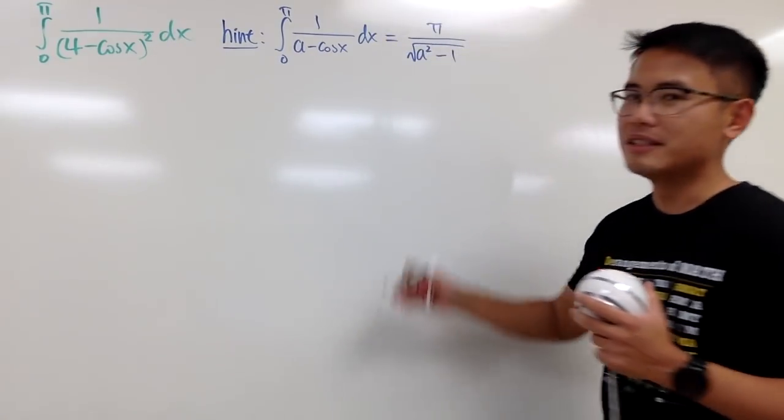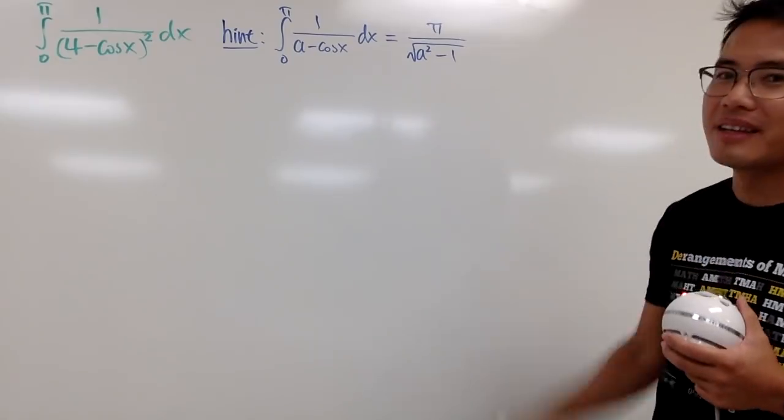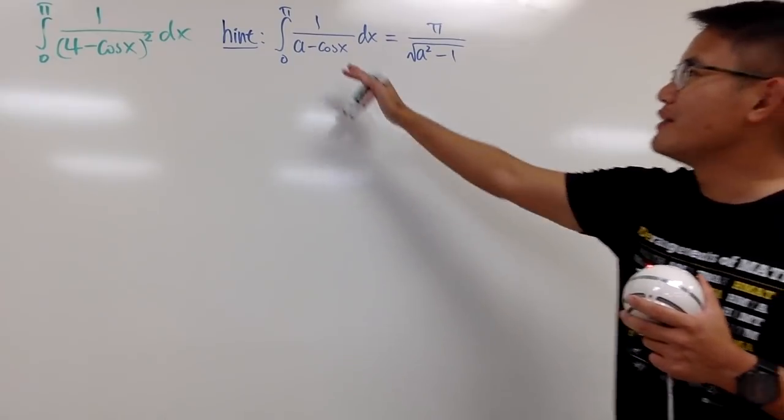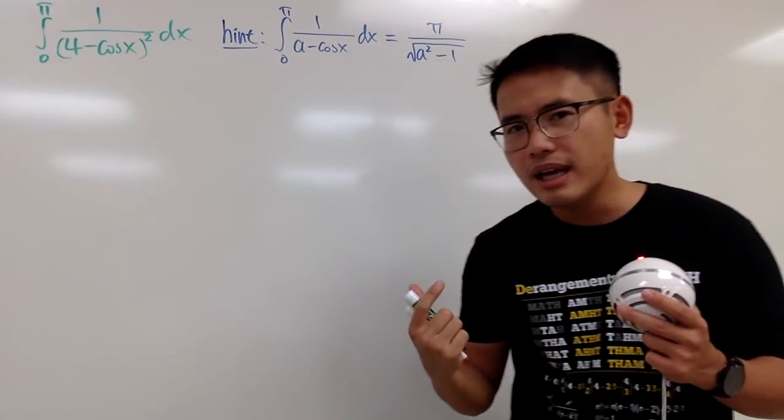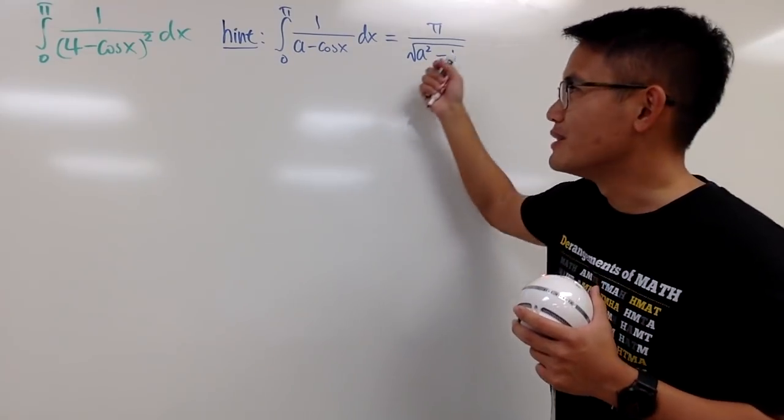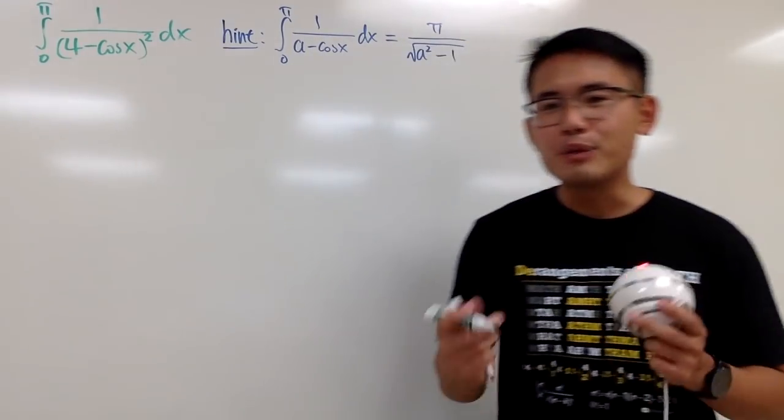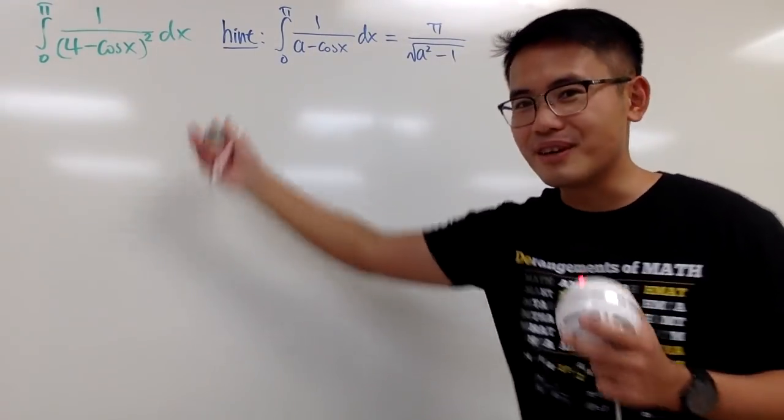And here is a little hint, which is the video that I did previously. When we have this, we do know the answer is pi over square root of a squared minus 1. So, is there any connection that you can make to use this to help us to get that? By the way, please pause the video and try this first.